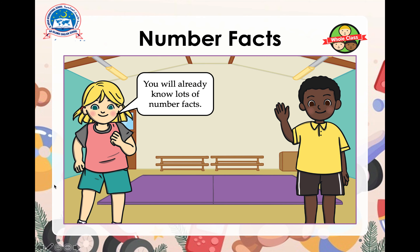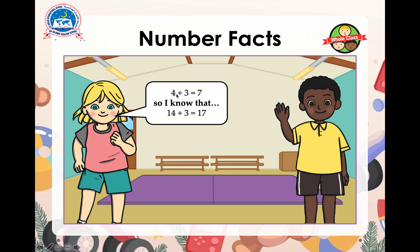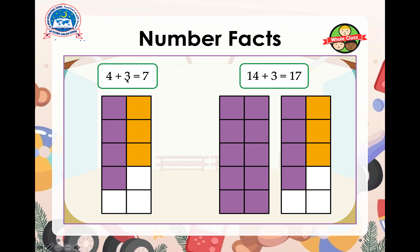Since we've learned a lot about number facts and addition, you will already know lots of number facts, and you can use these to make new number facts. We already know that 4 plus 3 equals 7, so we can use that to work out what 14 plus 3 is. We can see that 14 plus 3 equals 17 — we are just adding the 10. Try using blocks or number charts to help you prove this. Here, 4 plus 3 equals 7, and adding another 10-frame gives us the same digits, just with a 10 in front of the ones.